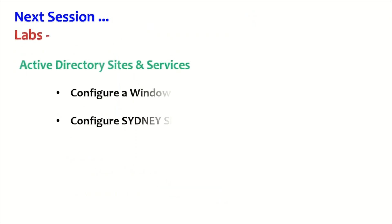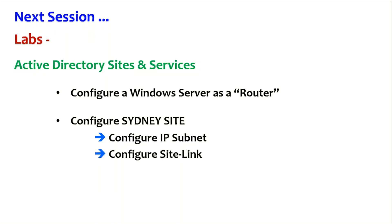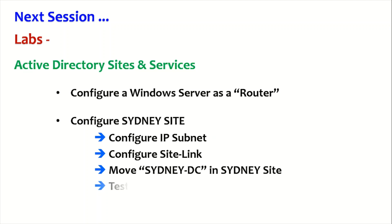In our next session, we'll be performing labs for Active Directory Sites and Services. We'll configure a Windows Server as a router, configure a Sydney site, configure the IP subnet, configure the site link, move our Sydney domain controller to the Sydney site, and test Active Directory replication.